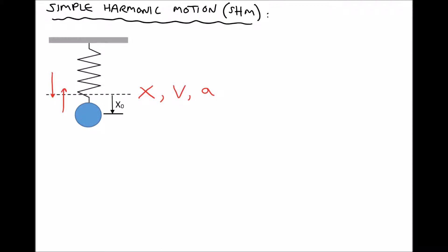There are a few things that are going to affect the displacement, velocity, and acceleration. One of those things is going to be the mass of the object, and another variable is going to be the stiffness of the spring. K represents the spring stiffness. In general terms, the stiffer the spring, the lower the displacement is going to be about the centre line, but the greater the acceleration is going to be. The stiffer the spring, the greater the force, and the greater the force, the greater the acceleration back towards the centre.